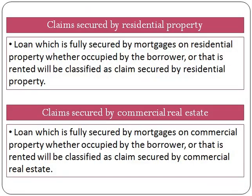Moving on to the eighth asset class: claim secured by residential property. Any loan which is fully secured by a mortgage on residential property — whether occupied by the borrower or rented — will be classified as a claim secured by residential property. The ninth asset class is claim secured by commercial real estate. Similarly, a loan which is fully secured by a mortgage on commercial property — whether occupied by the borrower or rented — will be classified as a claim secured by commercial real estate.